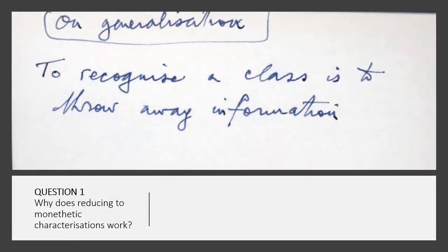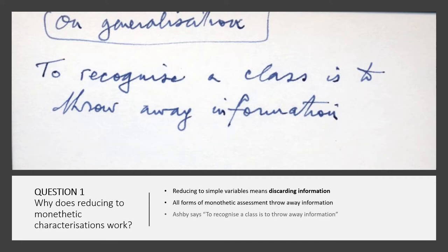This is an extract from a diary entry by Ross Ashby, who was one of the founding figures in cybernetics, and he argued that to recognize a class is to throw away information. So what he's basically saying is that the monothetic process of reducing things to categories is actually a process of getting rid of stuff. It's just saying, oh no, we're only going to focus on this particular category and we're not going to deal with anything else. So reducing to simple variables means discarding information. And all forms of monothetic assessment throw away information.